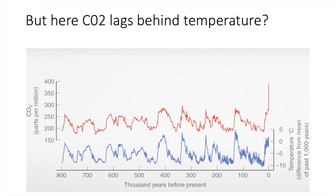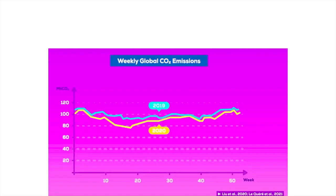Here we can also see that because of industries, CO2 is affected more. In 2019 the concentration was at a certain level, but then because of the COVID-19 lockdown, weekly global CO2 emissions decreased significantly — because most industries and businesses were shut down. So that decrease in CO2 during lockdown is proof that we humans are the ones generating CO2.